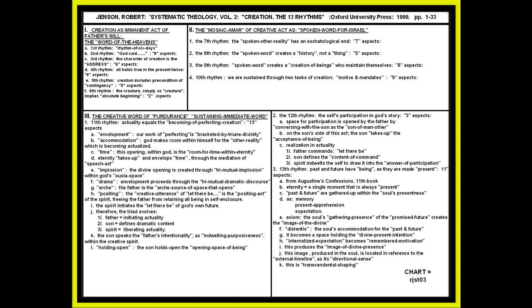And then that work of perfection and perdurance, where we work and participate within that tri-mutual Ousia space within God to move creation forward. That puts us up through page 33, and it gives us Robert Jensen's first consolidated, three-moment look at the doctrine of creation.